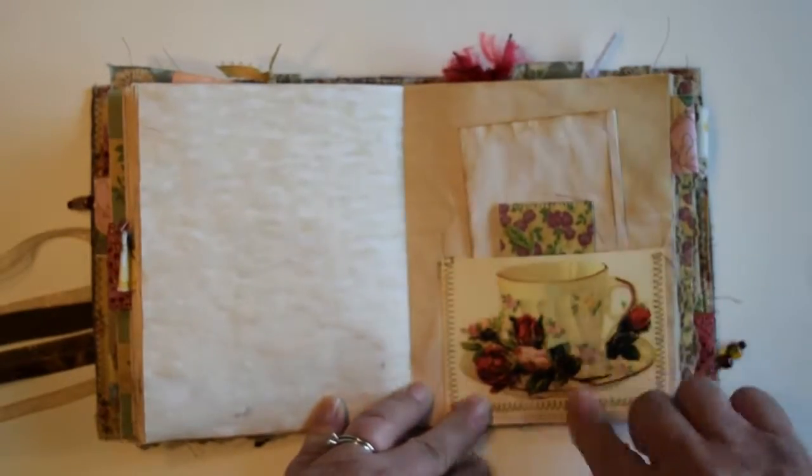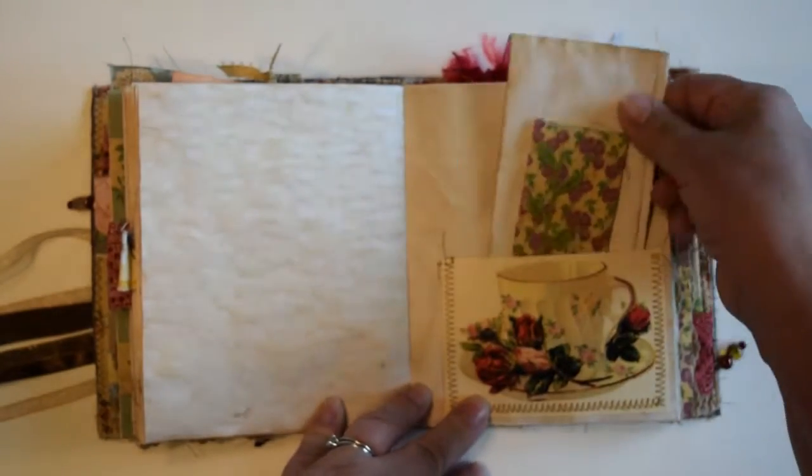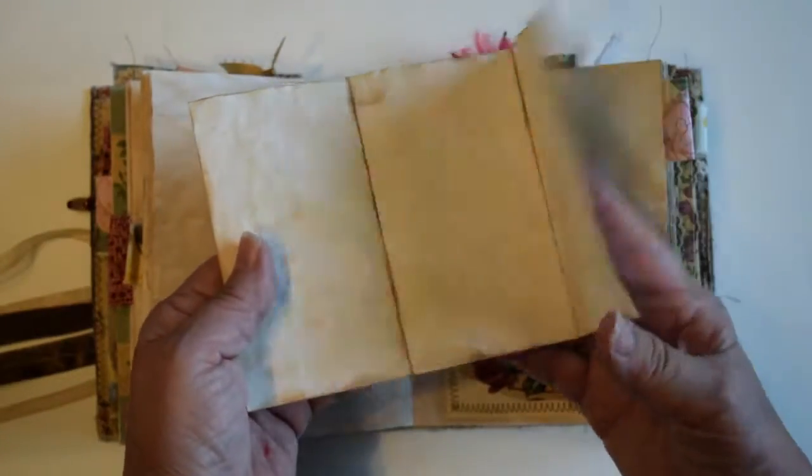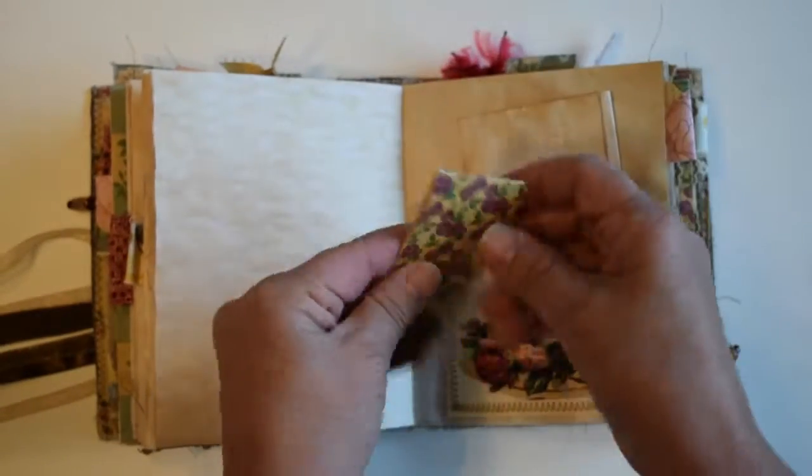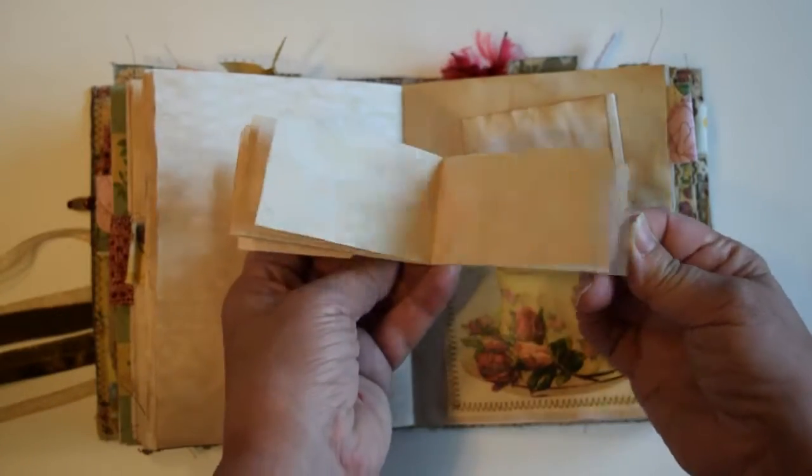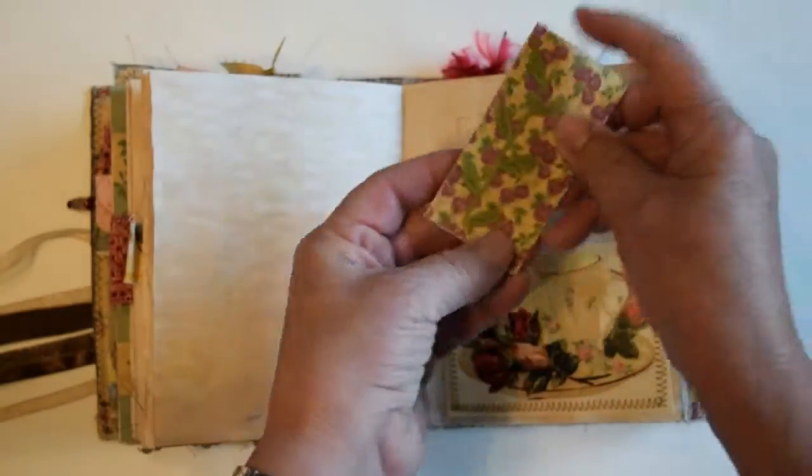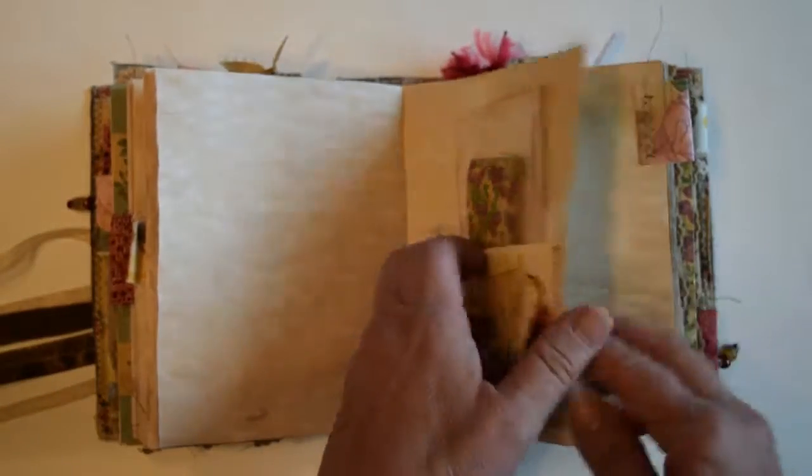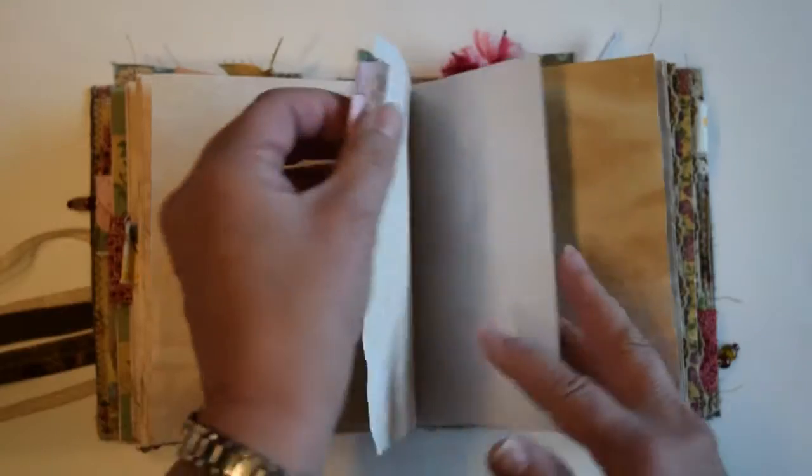And here's a little ephemera card made into a pocket. And I put in folded paper that I aged. And this is a little booklet with some tea-stained paper in it. There's a little trim glued on the front of that as well. And another tab.